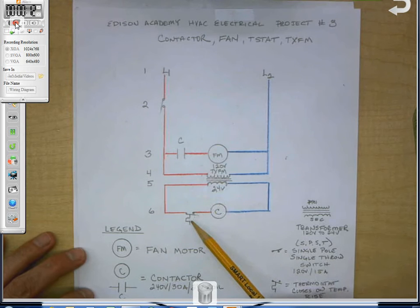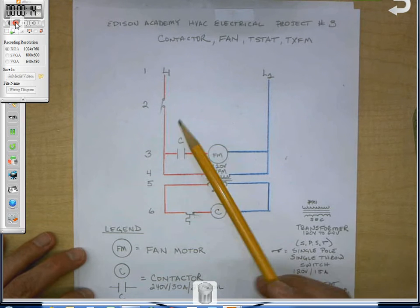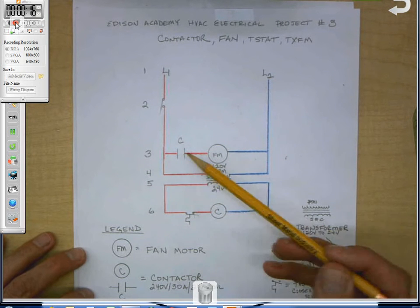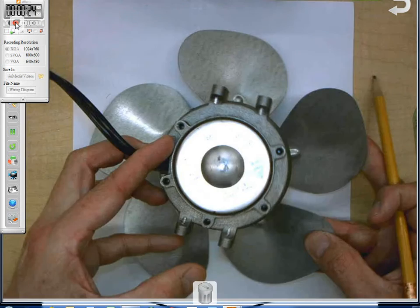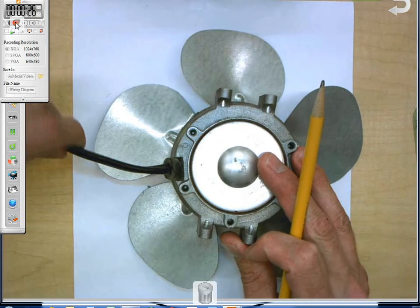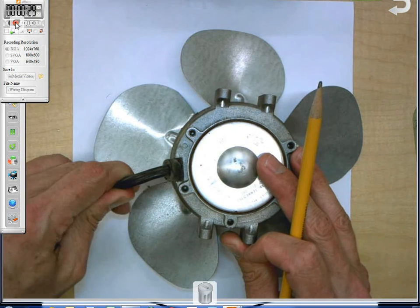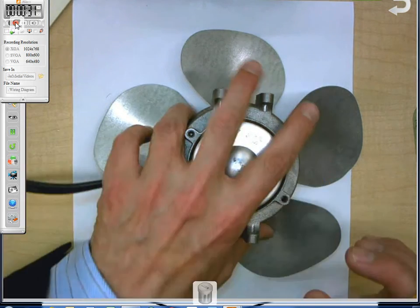We're going to draw the loads like we did the other day. I'm going to show you now, instead of just loads, we've got two different types of controls to introduce other than a single pole switch.